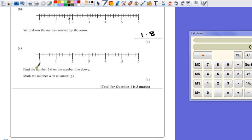Question C. Find the number 3.6 on the number line above. Mark with an arrow pointing upwards. So it's got to be 3 and a bit. Now this time there's only 5 marks between 3 and 4. So therefore each mark is worth 0.2.